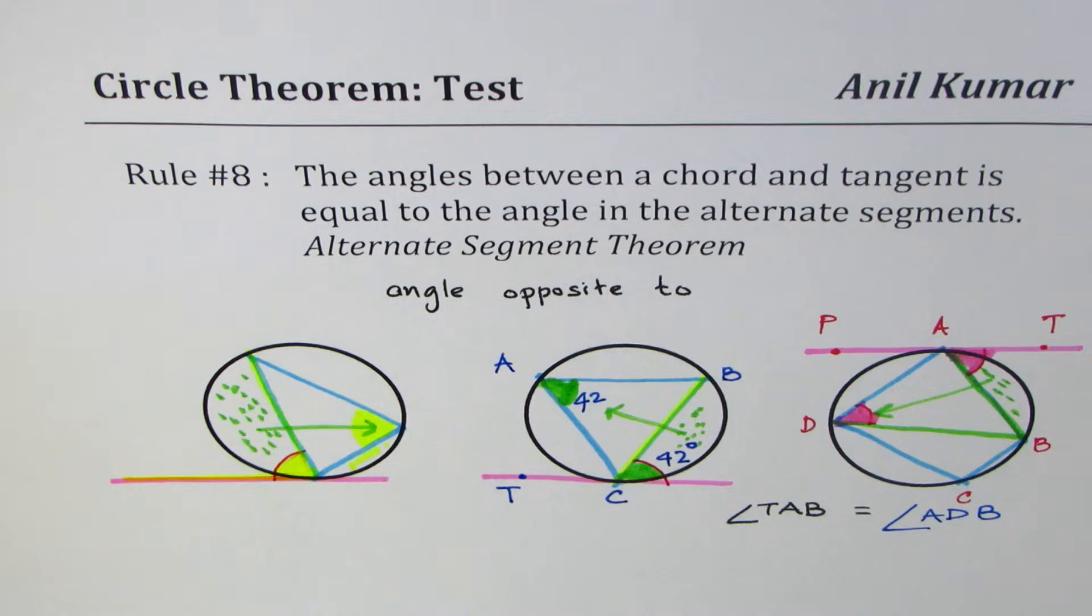I hope these three figures help you to understand how to identify the equal angles where rule eight or alternate segment theorem can be applied to solve questions of finding angles with triangles, squares, or any other shapes in a circle. I'm Anil Kumar. If you like, please like, feel free to subscribe and share. Thank you and all the best.